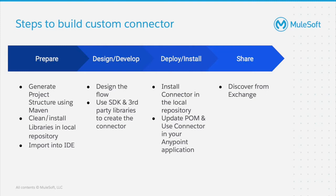In the develop stage, we are going to implement the flow based on our design using the libraries that we just imported. In the deploy stage, we install the connector to the local repository so that any Mule project that wants to make use of it simply needs to add the connector dependency to its POM file. And finally, you may share your connector with the community or within the organization by uploading it to the Exchange.